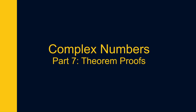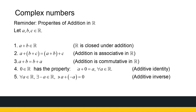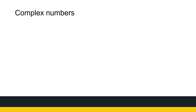In this last video on complex numbers, we're looking at some of the theorem proofs that we referred to earlier. Part 7 covers selected theorem proofs. We'll come back to some properties of real numbers because we will need to use them. We assume they're proved — the real number properties we're happy with. Now we want to prove the number properties for complex numbers. The first thing we look at is that C is closed under addition.